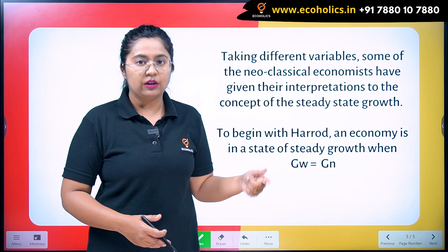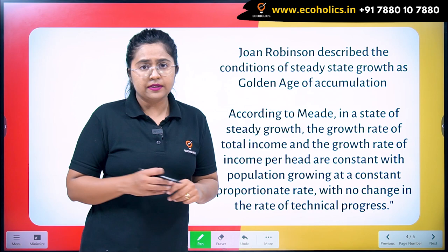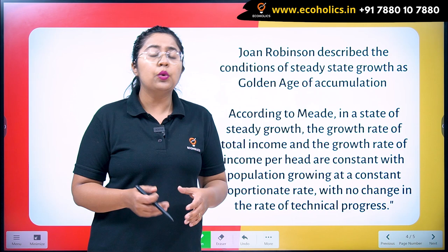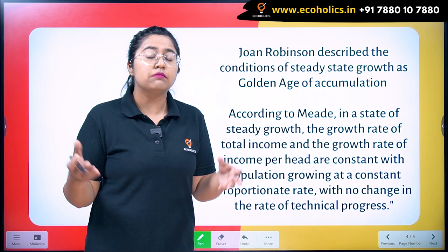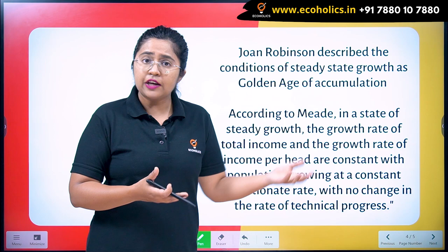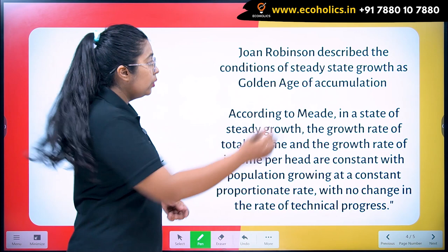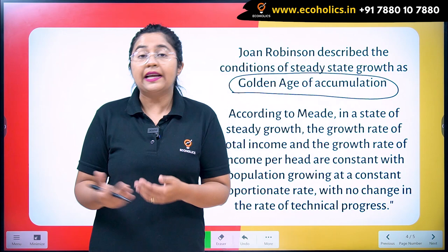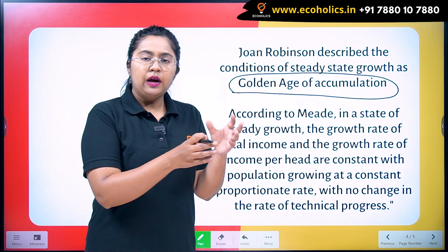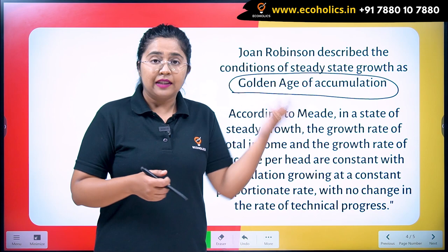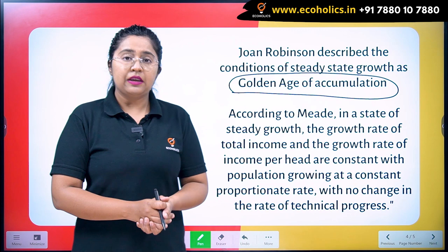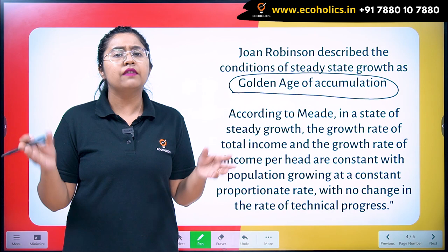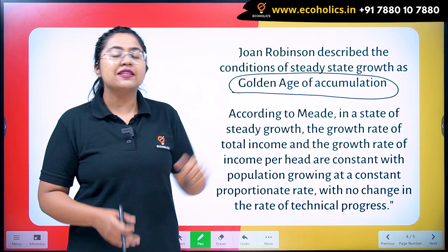When we talk about Joan Robinson, she was another very important economist who did major work in economic growth concepts as well as microeconomics, market stability, and market competition. She described the path of steady state growth as the golden age of accumulation. There are various golden ages in Robinson's model depending on how population and other variables are included or excluded. When the economy reaches a stage where capital accumulation and all other variables are in place, that becomes the golden age of accumulation.